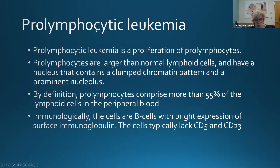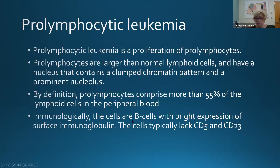Prolymphocytic leukemia is a proliferation of prolymphocytes — larger than normal lymphoid cells with prominent nucleoli. To make this diagnosis, prolymphocytes must be more than 55% of lymphoid cells in the peripheral blood. They are B cells with bright surface immunoglobulin expression, but unlike CLL, they lack CD5 and CD23.